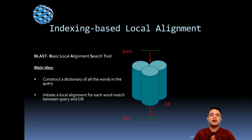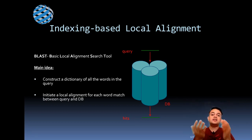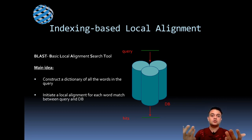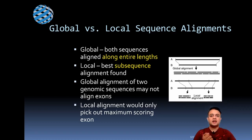BLAST stands for Basic Local Alignment Search Tool, so it is a kind of local alignment. The main idea of BLAST is the construction of a dictionary of all the words in the query — the query words plus related words — and then searching this dictionary against the database. This is similar to a Google search — both are index-based searches. BLAST also incorporates fuzzy logic: it initiates a local alignment for each word match between the query and the database, and whenever a significant alignment is found, the alignment extends in both directions.